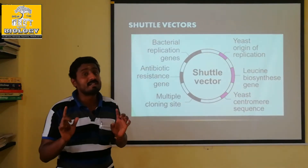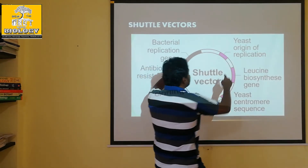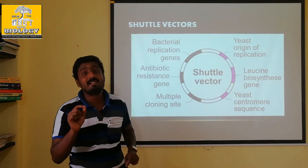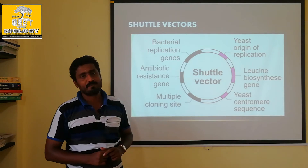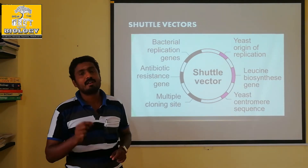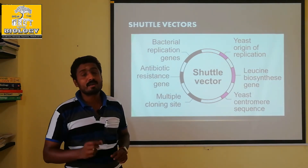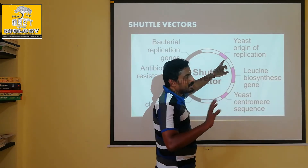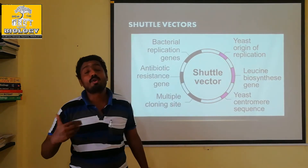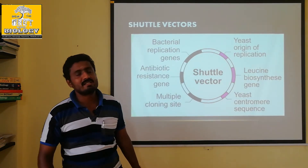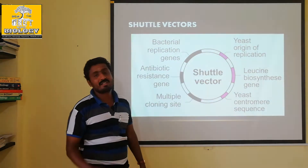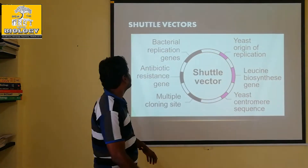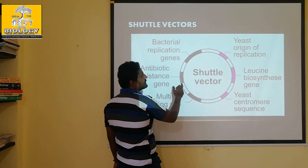We will do the replication at two sites. That is the origin of replication. Replication starts from this point, and it will be cloned to the next generation. The next cell will divide. This is also where the antibiotic resistant gene functions.